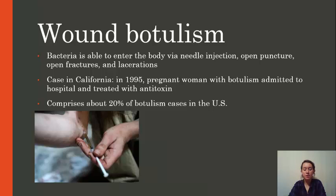Wound botulism happens when bacteria are able to enter the body through abrasions or needle injection. A lot of cases have cropped up in California. For example, in 1995, a pregnant woman was admitted to a hospital and diagnosed with botulism with toxin type A. She was eventually treated with the antitoxin and her recovery lasted about two months. This form of botulism comprises about 20% of botulism cases recorded in the United States.